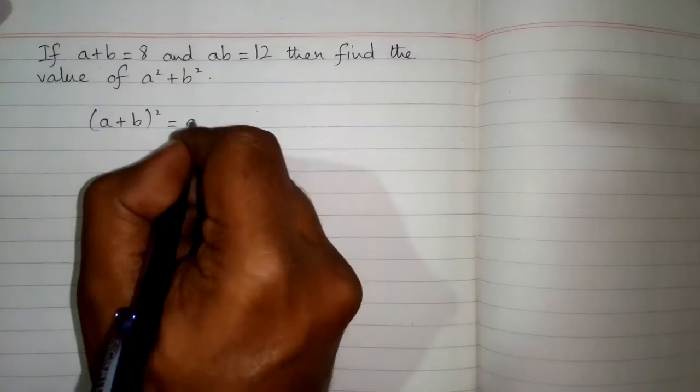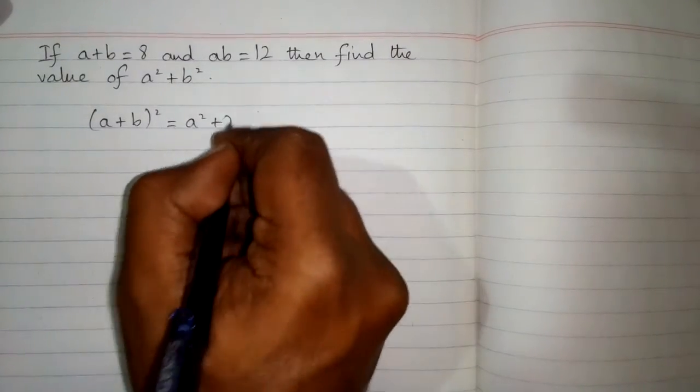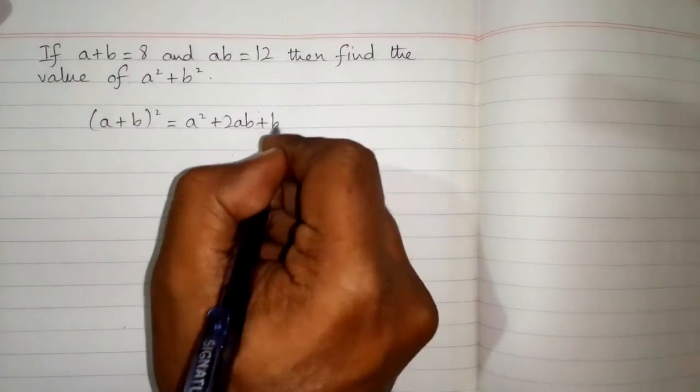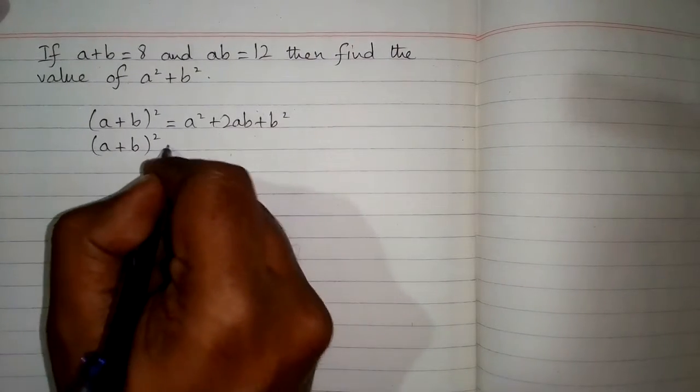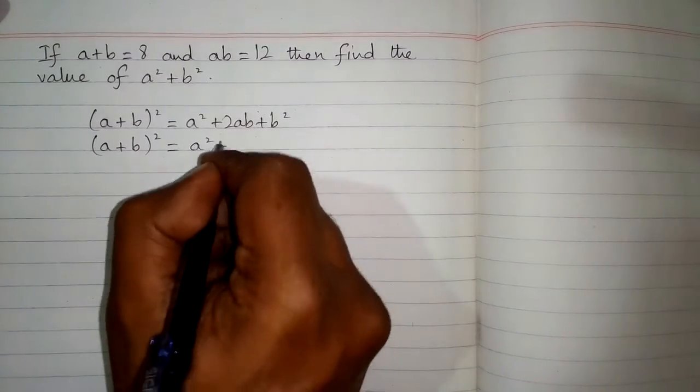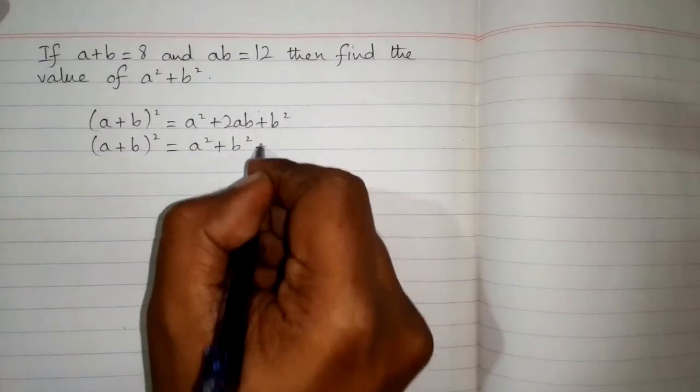Now this can be written as (a+b)² equals a²+b² plus 2ab. By using the commutative law, we can interchange b² and 2ab.